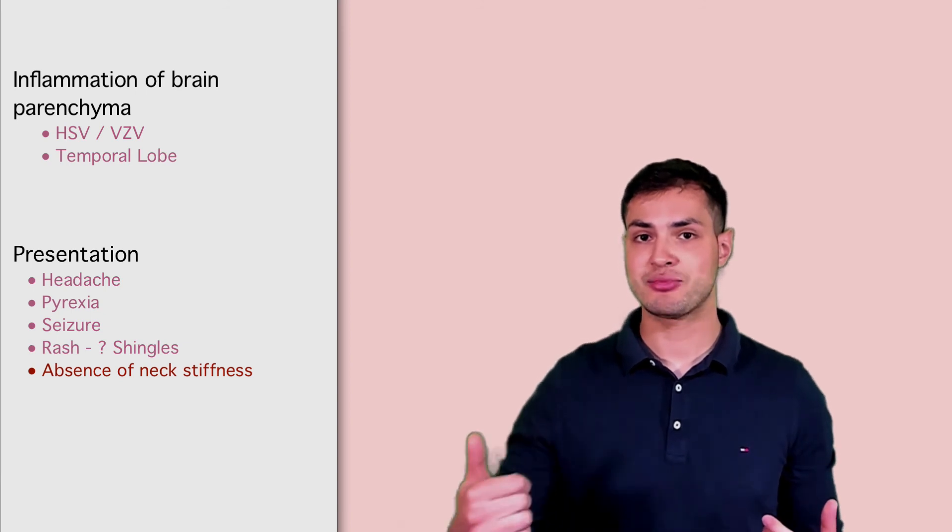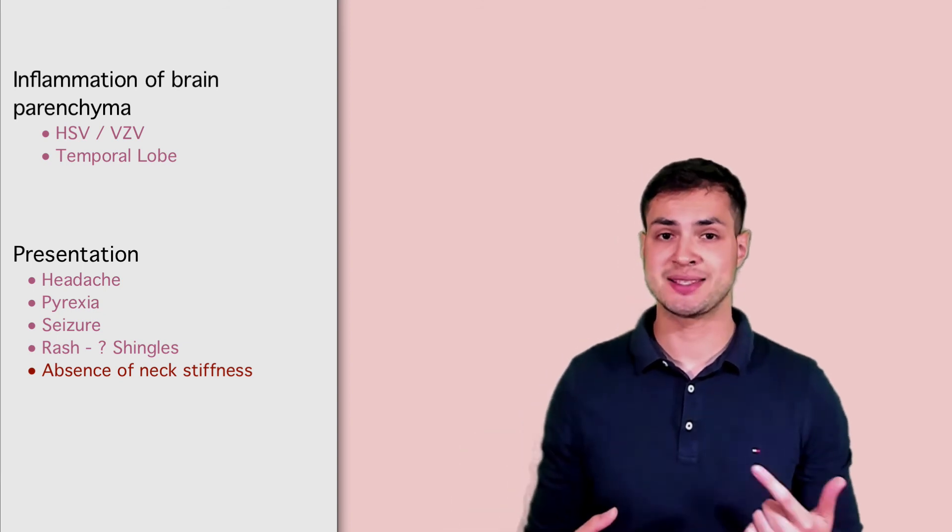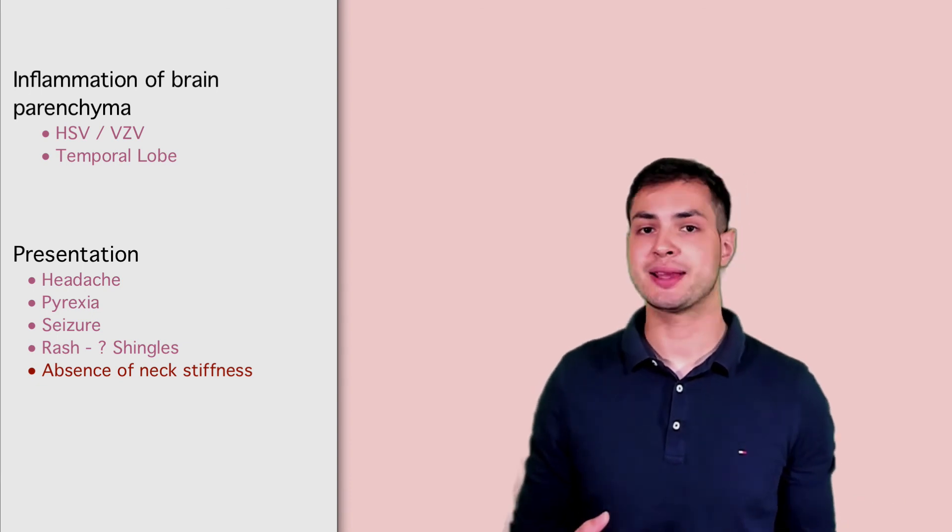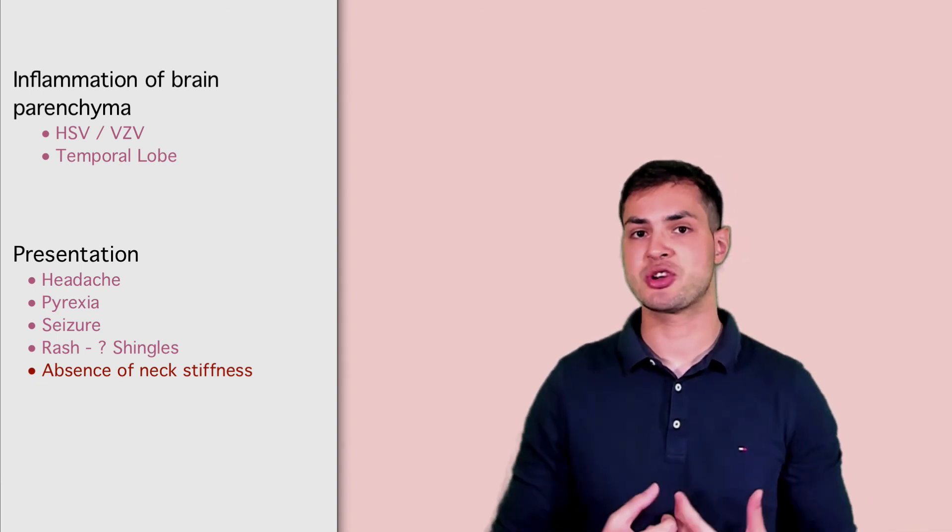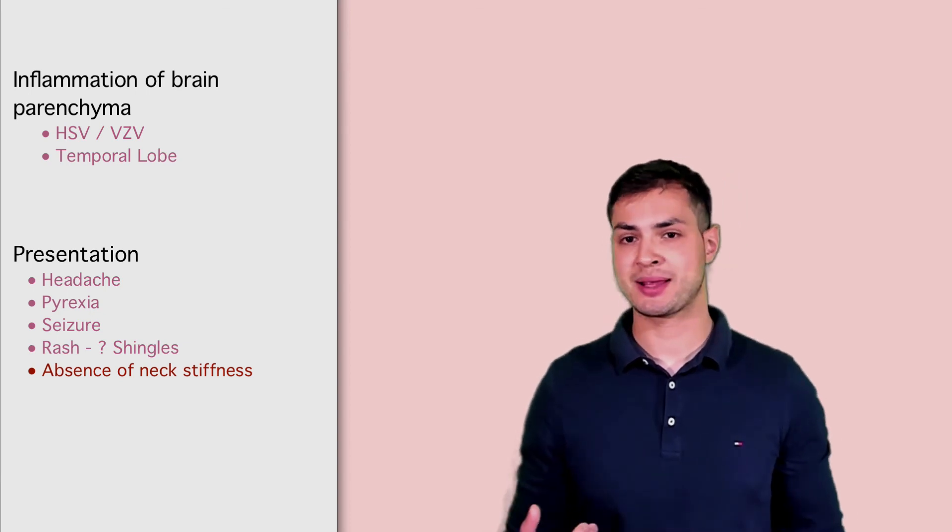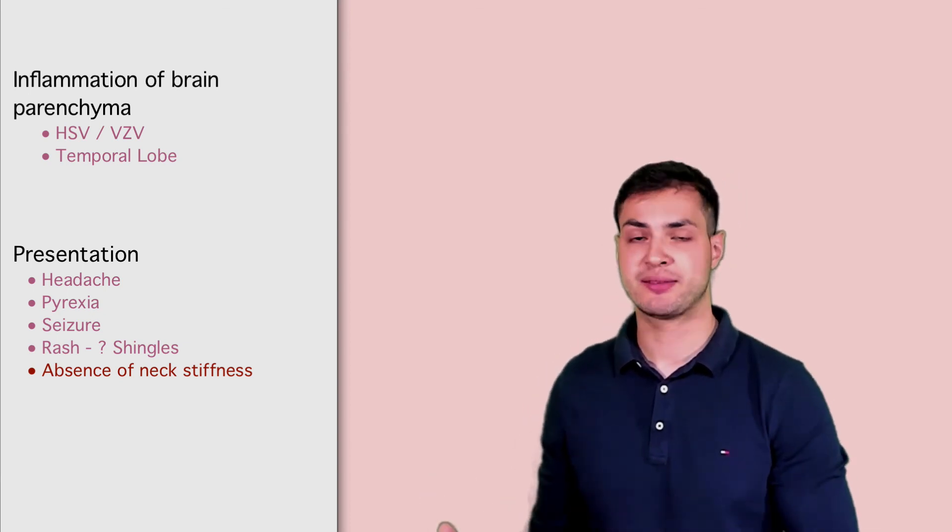So how does it present? It affects usually the temporal lobe with these viruses. So it presents with a seizure. It presents with a fever and a headache. So fever, headache, seizure is usually the presentation of encephalitis. And if there is a rash, then you might want to suspect a varicella zoster encephalitis.